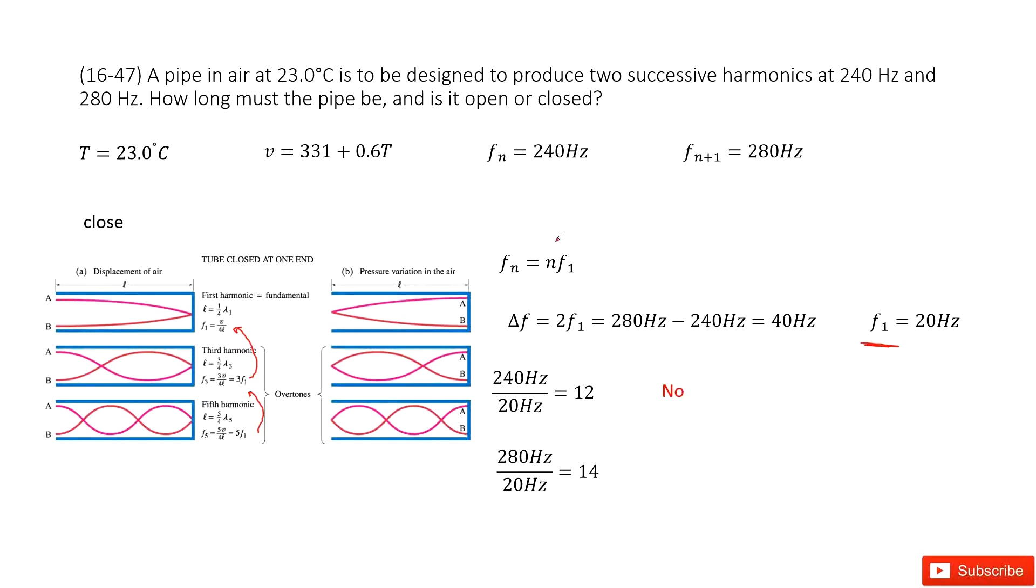Now we look at which n value for 240 Hertz: 240 divided by 20 equals 12. And for 280 Hertz: 280 divided by 20 equals 14. Is 12 successive with 14? No.